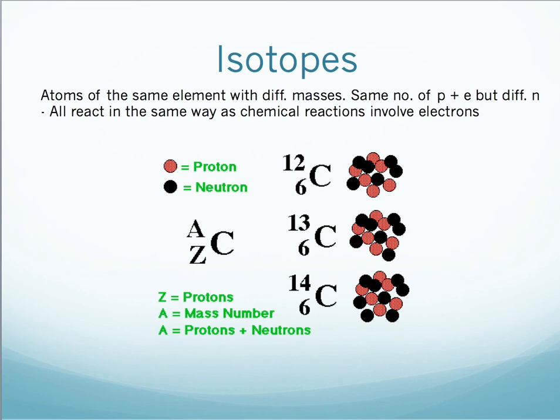Let's talk a little bit about isotopes. Isotopes are atoms of the same element with different masses. They have the same number of protons and electrons, but a different number of neutrons. Because it's only the difference in the neutrons, it means that all isotopes of the same element will react in the same way, because chemical reactions only involve electrons. Here I've got an example of carbon. Carbon has three isotopes, carbon-12, carbon-13, and carbon-14.